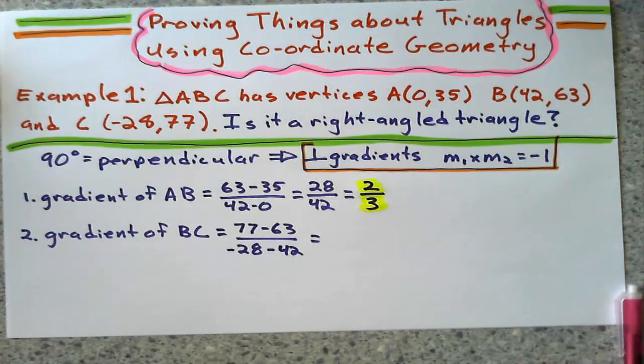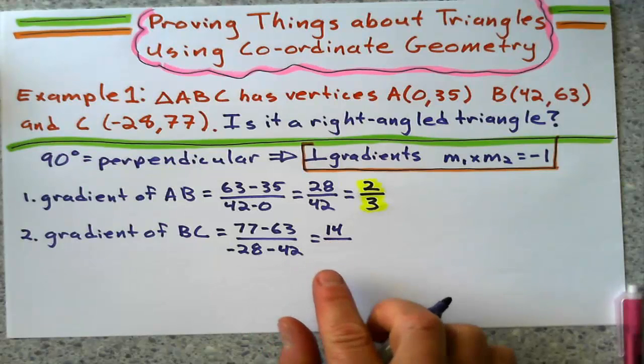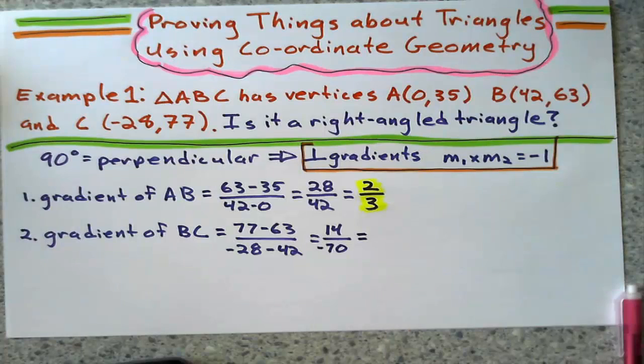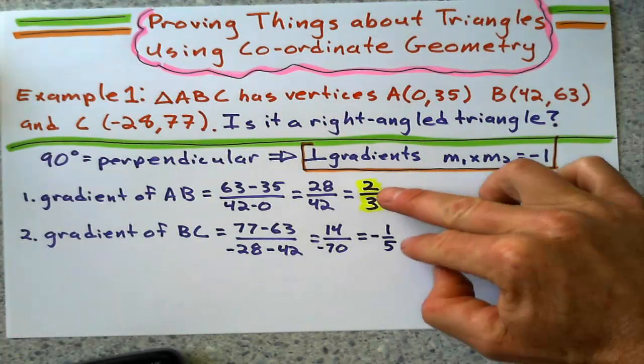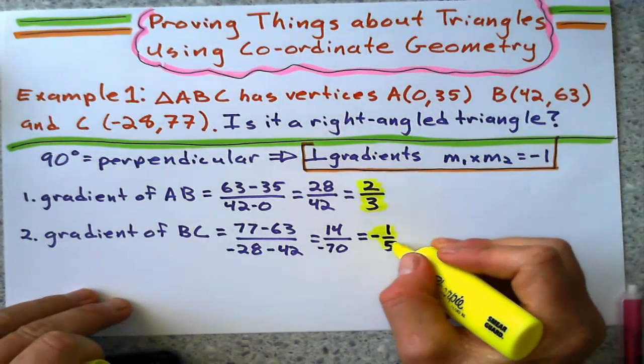I get 14 for the change in Y, and for the change in X, I'll get negative 70. What does that simplify down to? Negative one-fifth. So definitely these two lines are not perpendicular.